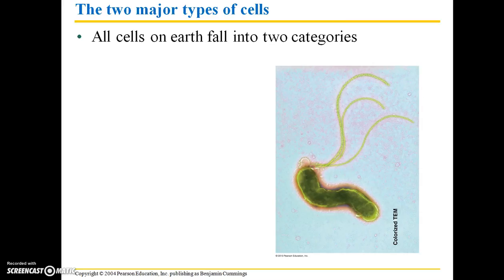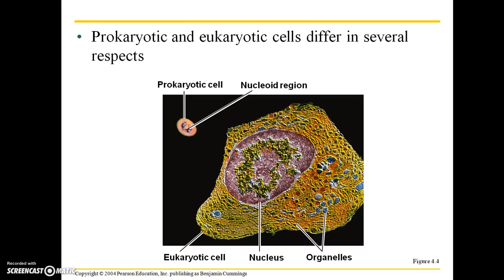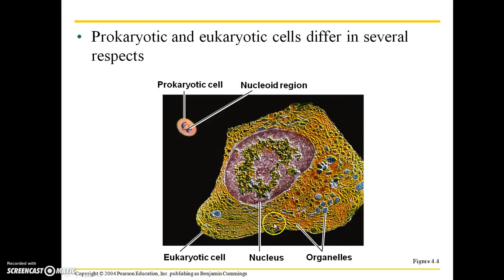In addition to being either unicellular or multicellular, all cells on earth fall into two categories: prokaryotic cells and eukaryotic cells, and these differ in several respects. This is a micrograph of a prokaryotic cell in comparison to a eukaryotic cell. One of the most obvious differences, of course, is size — typically eukaryotic cells are going to be much larger.